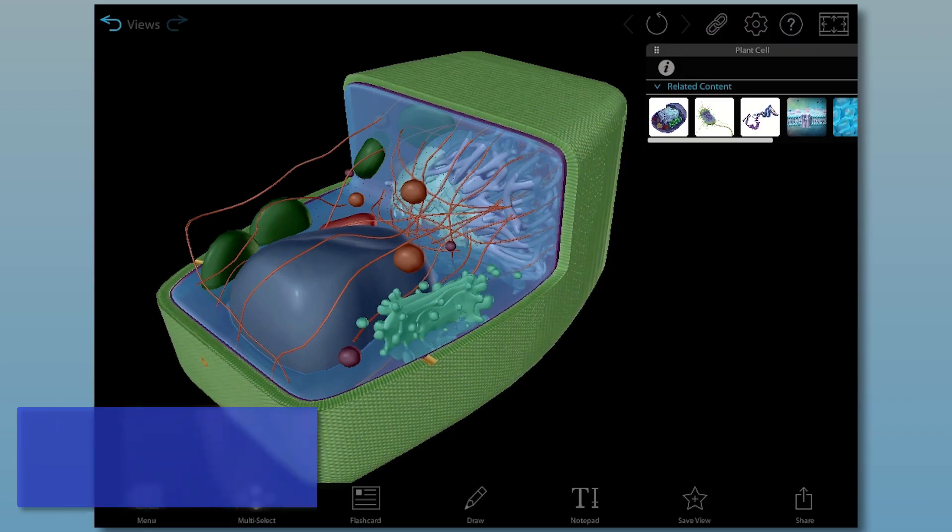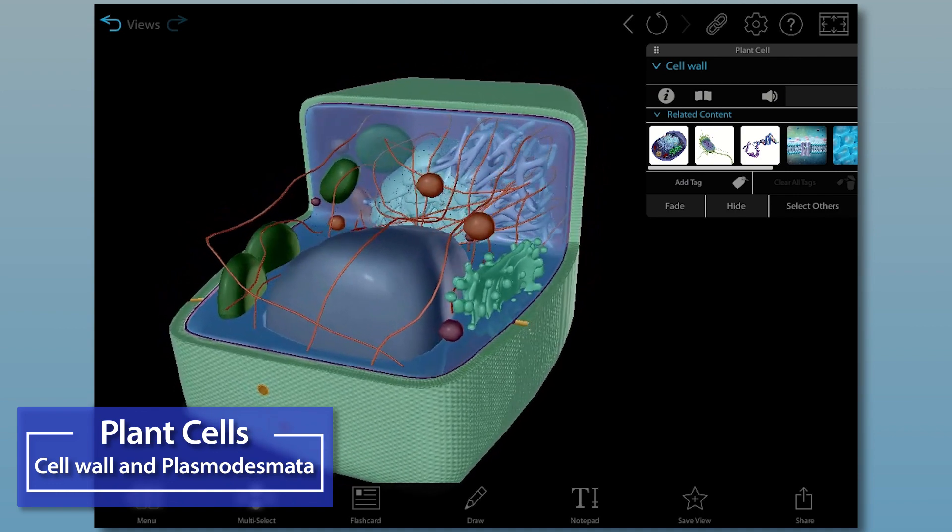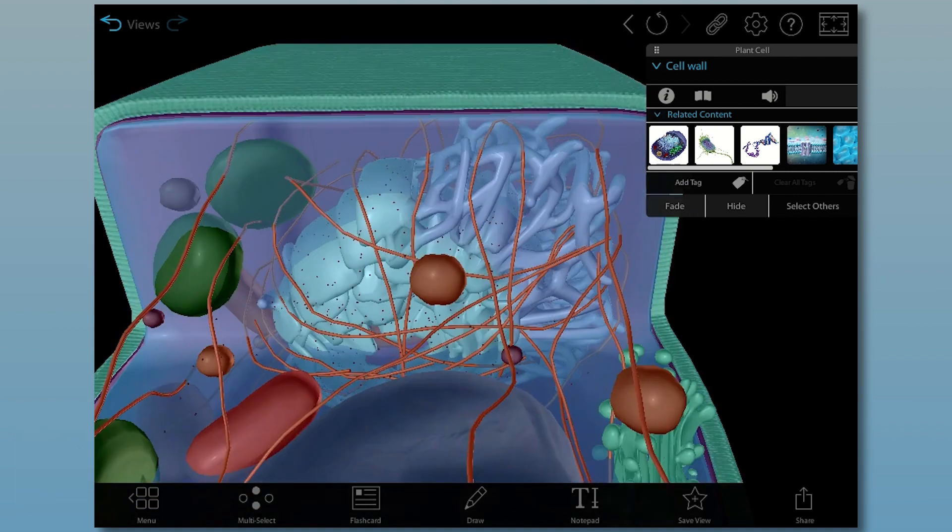Plant cells have quite a few structures that you don't see in animal cells. The first is the cell wall located outside the plasma membrane. It protects the cell and helps it maintain its shape.